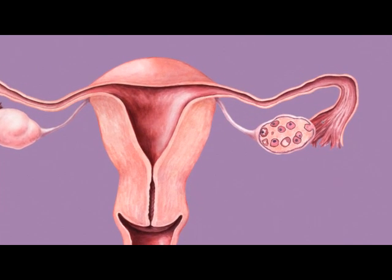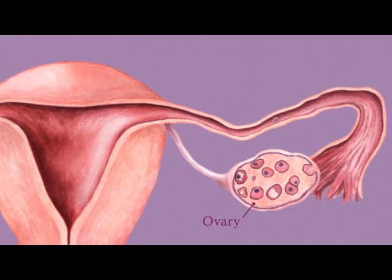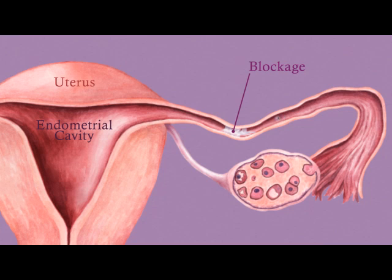During fertilization, the egg travels from the ovary through the fallopian tube and into the endometrial cavity of the uterus. Conception cannot occur if a blockage prevents the egg from traveling its normal path through the fallopian tube and into the endometrial cavity.